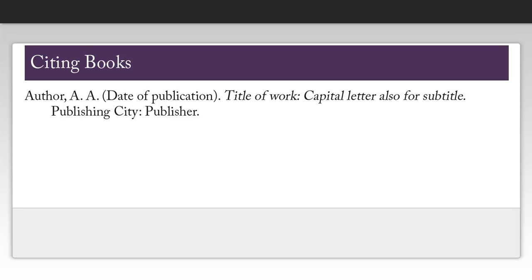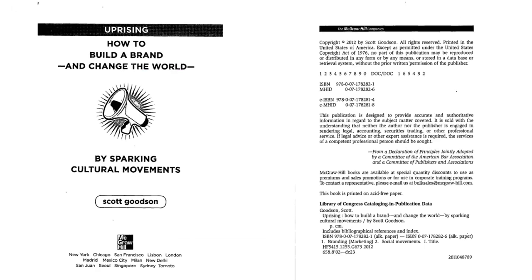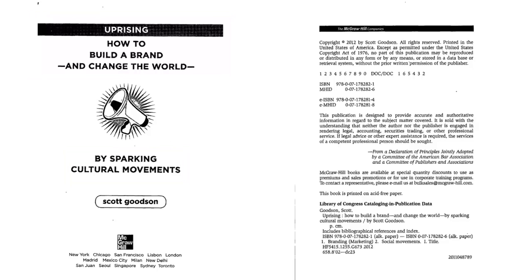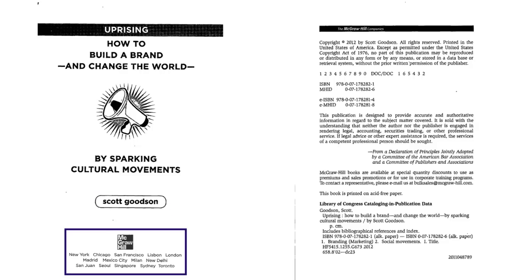Most of this information can be found on the title page. Let's take a look at the title page of a book by Scott Goodson. The book is called Uprising: How to Build a Brand and Change the World by Sparking Cultural Movement. Just under that is the name of the author — sometimes you'll have more than one. And then at the bottom of the page, you'll usually find the publisher, in this case McGraw-Hill.